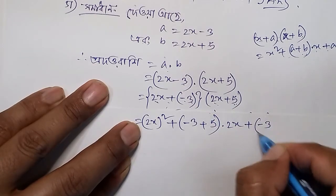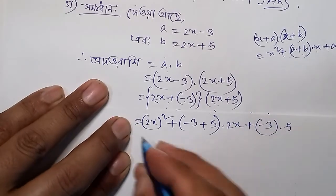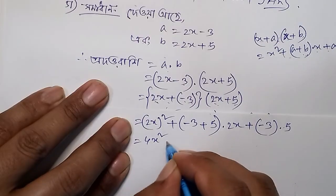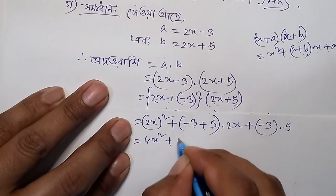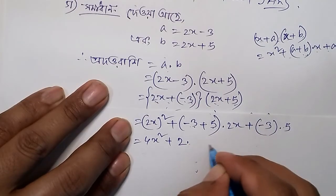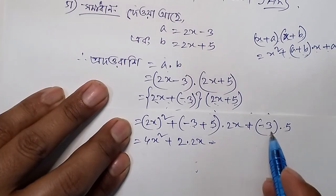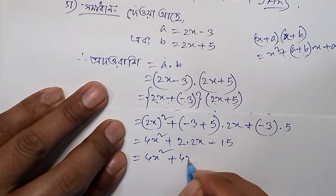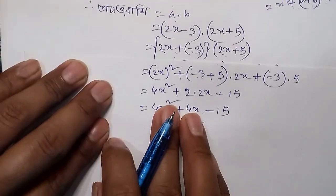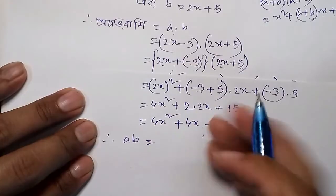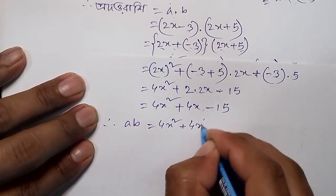Minus 3 multiplied by b which is 5. So 2x squared gives 4x squared. Then we have minus 3 plus 5, which is 2, into 2x, giving 4x here. And minus 3 into 5 equals minus 15. So a into b, that is ab, is equal to 4x squared plus 4x minus 15.